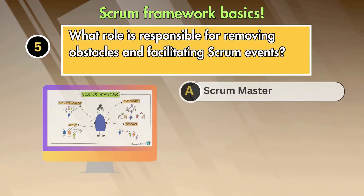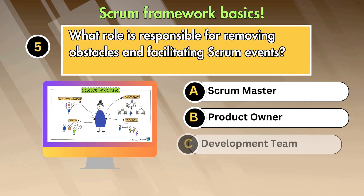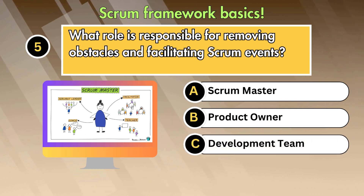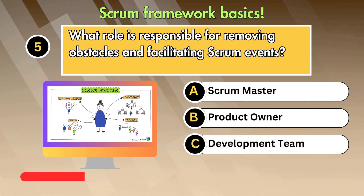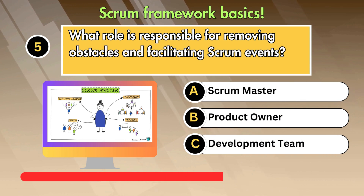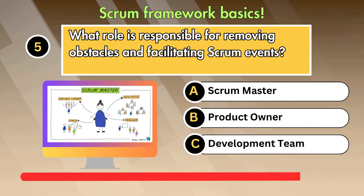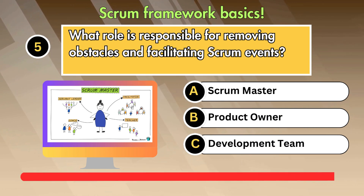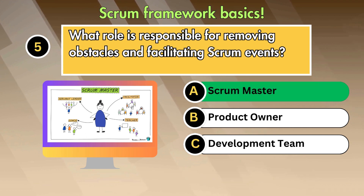Question 5: What role is responsible for removing obstacles and facilitating Scrum events? Option 1: Scrum Master. Option 2: Product Owner. Option 3: Development Team. Answer is: Scrum Master.